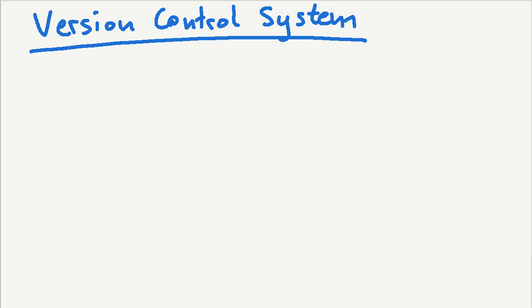Hello, some random details and some language explanation about how a version control system works. Please keep in mind all these words are just new words that you might have never heard before, but they basically describe a very simple concept if you first understood what the concept is about. Okay, let's get started.